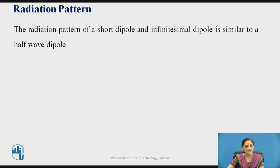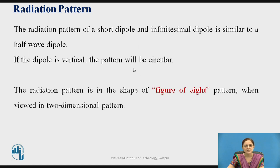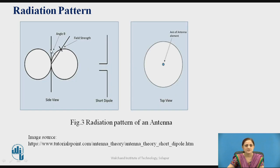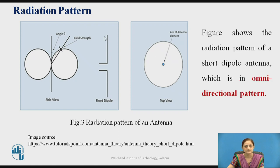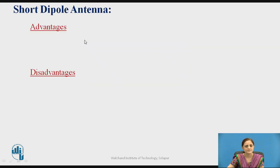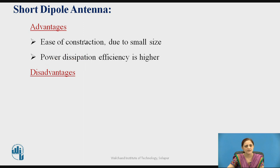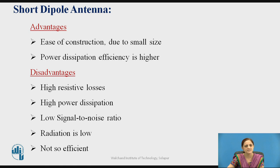The radiation pattern for the short dipole antenna: when the dipole is vertical, the pattern will be circular. The radiation pattern is a figure-of-8 pattern when viewed in a two-dimensional figure — the side view shows a figure-of-8 and the top view shows an omnidirectional pattern. Advantages include ease of construction due to small size and higher power dissipation efficiency. Disadvantages are high resistive losses, high power dissipation, low signal to noise ratio, and low radiation efficiency.